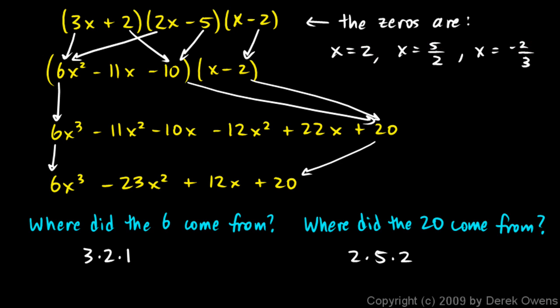And what I hope you see from this example, and all the arrows that I've drawn on the screen here, is that that was not an accident. That will work out that way every time. This number here, the constant term, is always made from multiplying the numerators of the zeros together. And this number here, the lead coefficient, is always made from multiplying the denominators together.